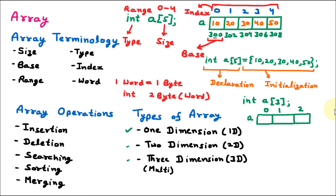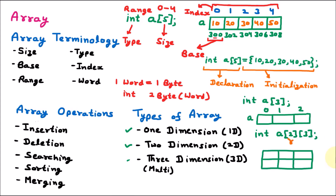The 2D array is declared as int a[2][3]. There are two brackets, which is why it's called a two-dimensional array. The first bracket signifies rows — here there are 2 rows with index values 0 and 1. The second bracket signifies columns — here there are 3 columns with index values 0, 1, and 2. A 2D array is like an Excel sheet or table.